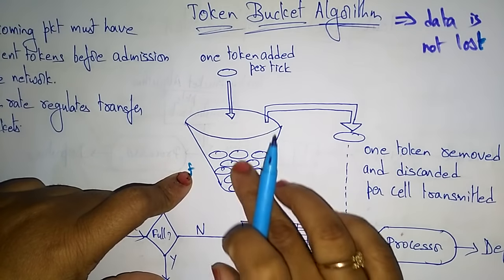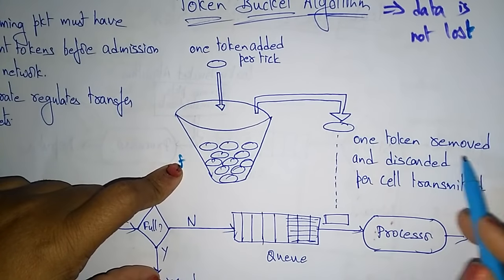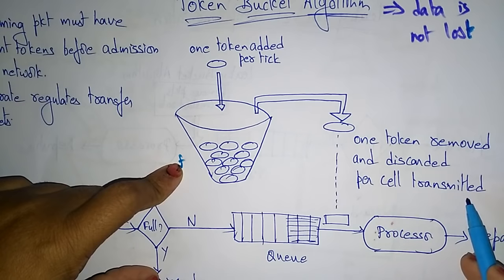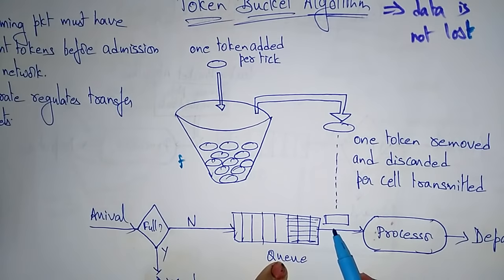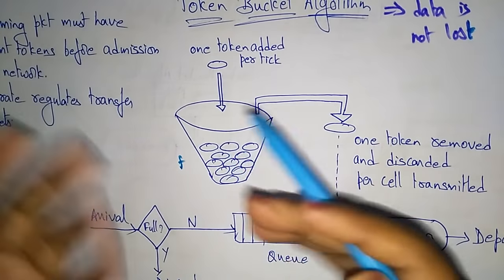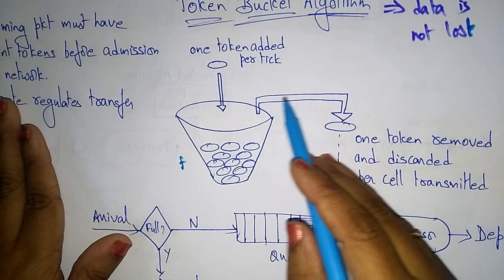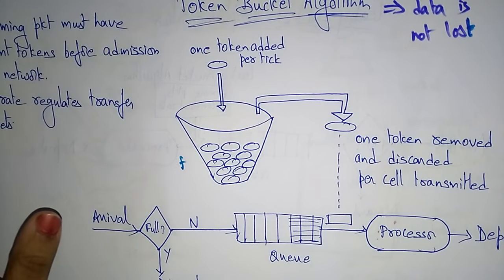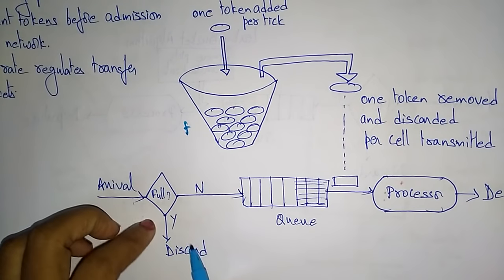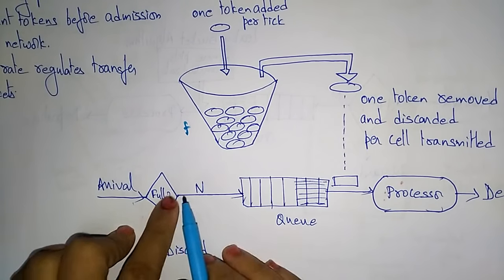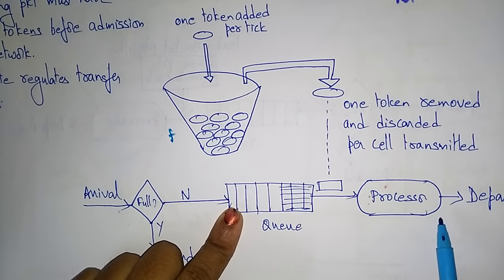The bucket has a maximum capacity F. If there is a ready packet, one token is removed from the bucket and discarded per cell transmitted — one token is removed and the packet is sent. If there is no token in the bucket, the packet cannot be sent. Whenever there is a token in the bucket, the packet will be sent. When the bucket is full, arriving tokens are discarded; otherwise they enter the queue, and packets are sent one after another to the processor and depart.